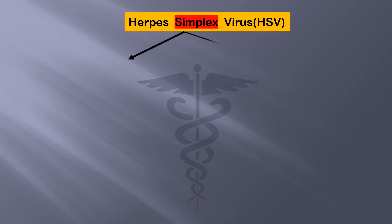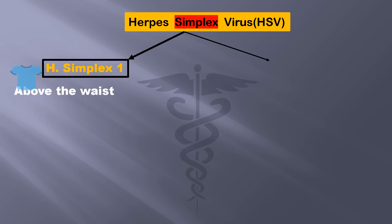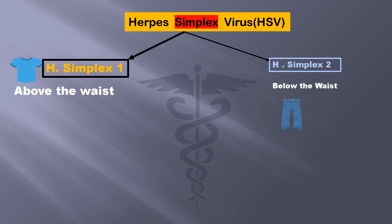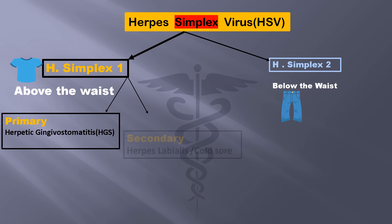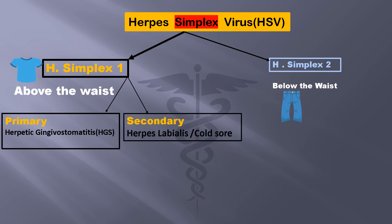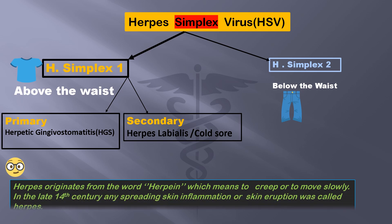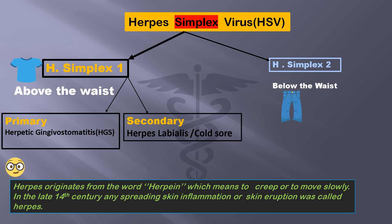The herpes simplex virus is of two types: herpes simplex 1 and herpes simplex 2. Type 1 occurs in the skin above the waist and type 2 in the skin below the waist. Type 1 is further divided into primary, also known as herpetic gingivostomatitis, and secondary, also called herpes labialis or cold sore. The word herpes originates from 'herpein' which means to creep or to move slowly. In the late 14th century, any spreading skin inflammation or eruption was called herpes.